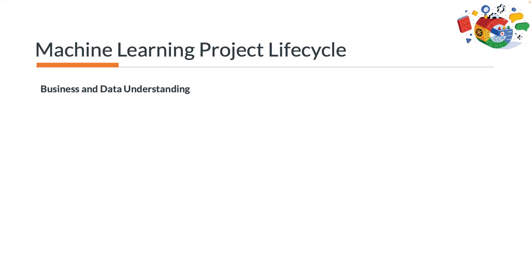In this lecture of the course, we want to explore business and data understanding. Phase 1 of CRISP-ML(Q) is critical as it sets the foundation for the entire data analysis process. In this phase, the business objectives and requirements are defined and the problem statement is articulated. The goal is to establish a clear understanding of what the business hopes to achieve with the data analysis project and to identify the key stakeholders involved. By the end of this phase, the business objectives and requirements should be well defined and a preliminary plan of action should be in place.